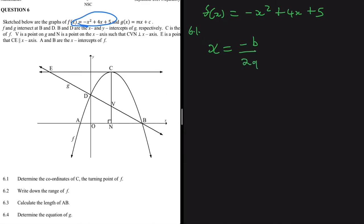With the equation in standard form, a = -1, b = 4, and c = 5. Substituting into the formula, we get x = -4 divided by 2(-1), which is -4 divided by -2, giving us x = 2. So the x-value of the turning point is 2.